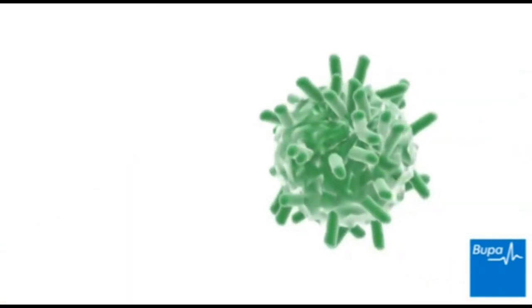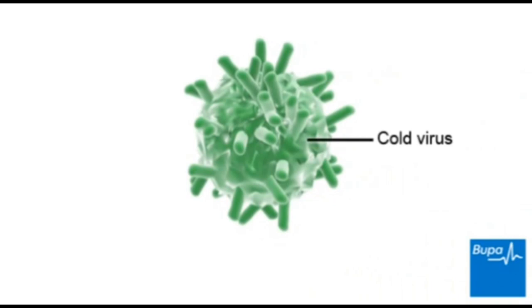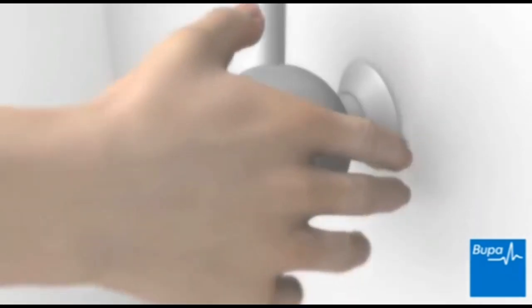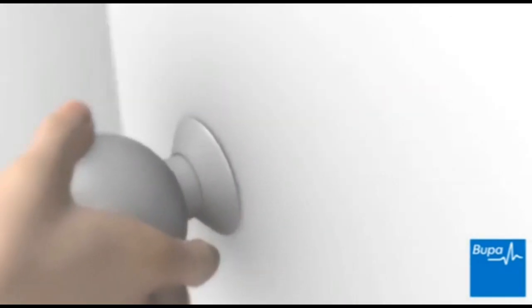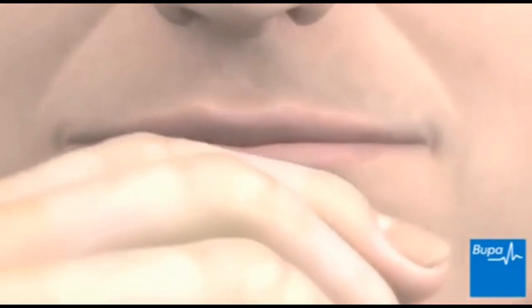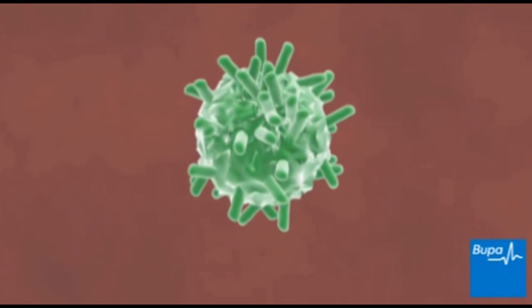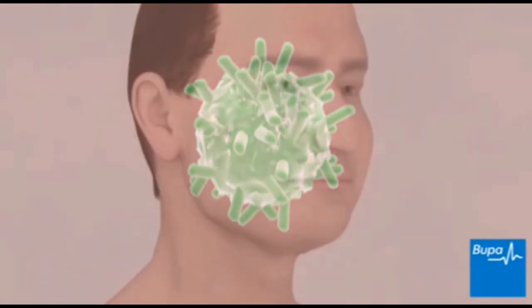Cold viruses, such as the rhinovirus and coronavirus, are taken into the body when you breathe them in from the air, or when you touch surfaces which have the virus on them and then touch your mouth, nose or eyes. You can also get cold viruses from close or direct contact with someone with the virus, by kissing someone with the virus, for example.